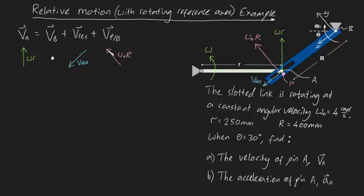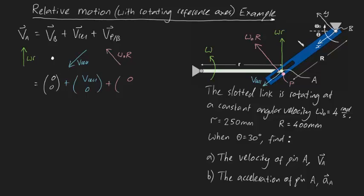Now let's break everything up into i and j components, starting with the right-hand side. V_B is zero in both i and j. V_rel is purely in the x-direction, so we write it as V_rel·i plus 0·j. The V_P/B term has no i component, so it's 0·i plus omega_naught·R·j, since all of that velocity is in the positive j direction. Now for V_A — we know it faces upwards, but we need to deconstruct it into i and j components.